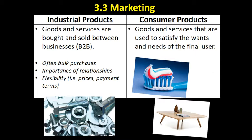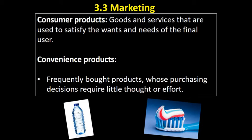Consumer products are goods and services that are used to satisfy the wants and needs of the final user — products designed to be consumed by the final user. There are three different types you need to be aware of.